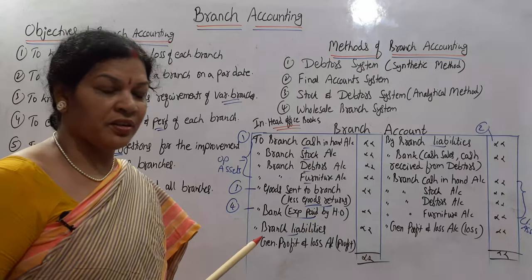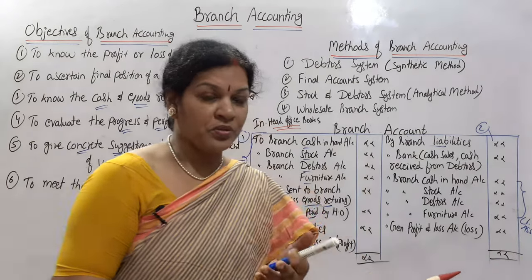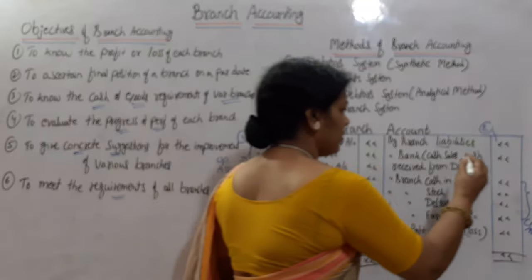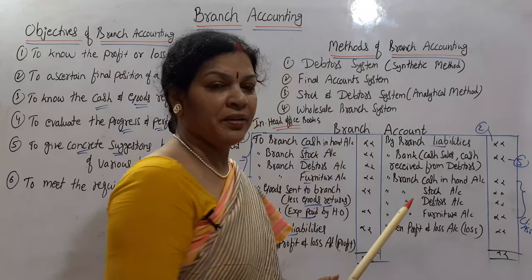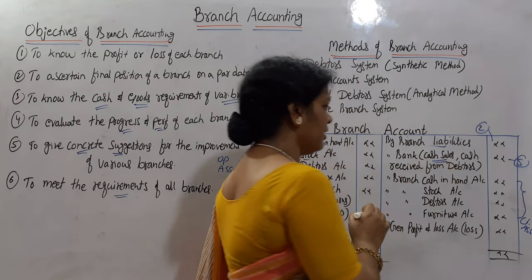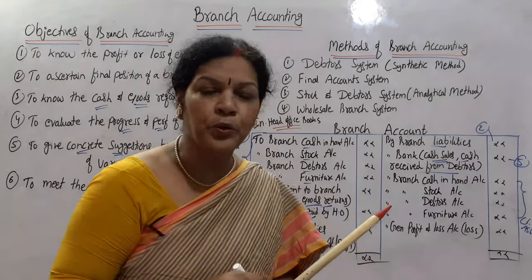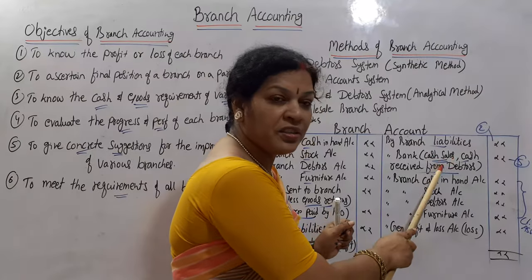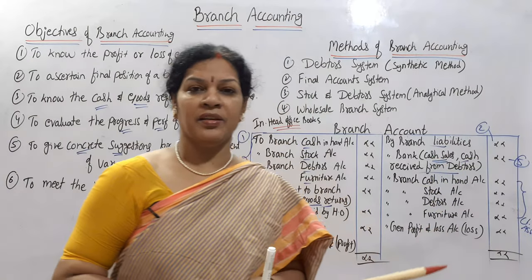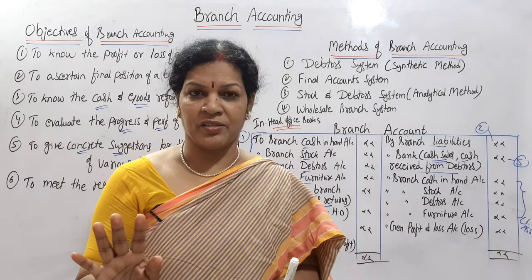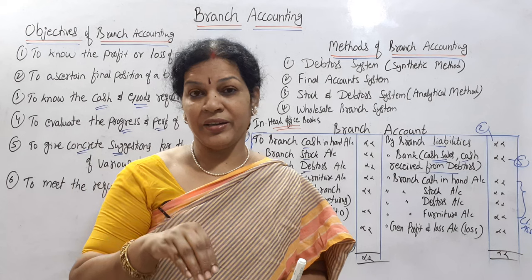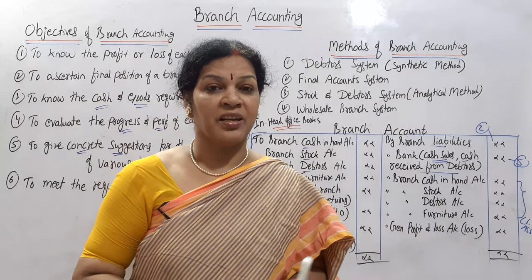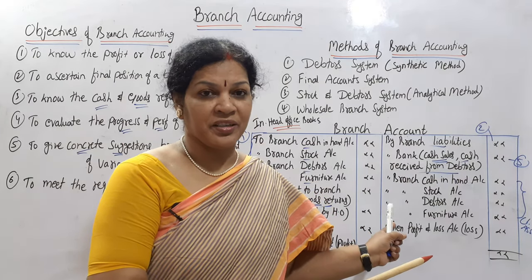The fifth entry: when the branch sells goods, we say 'by bank.' By bank means cash sales and cash received from debtors — only these two items are taken on the credit side. What are those? One is cash sales, and the other is cash received from debtors. For credit sales — no, we do not take credit sales in the branch account. For credit sales, if there are debtors, generally we can open a debtors account and write credit sales there, but in the branch account we do not write credit sales.